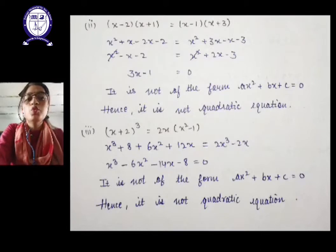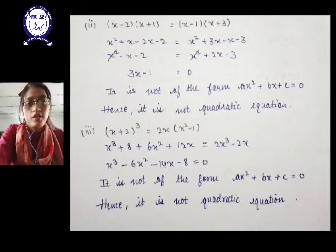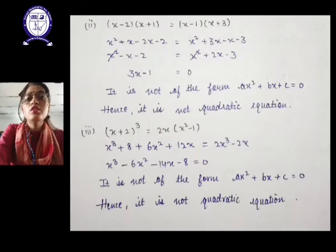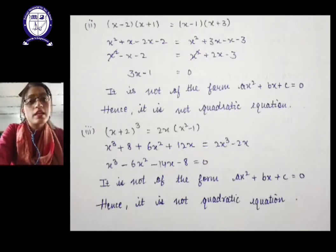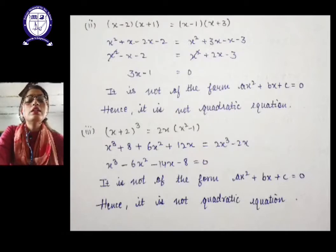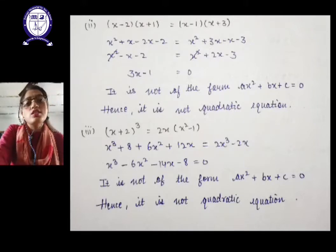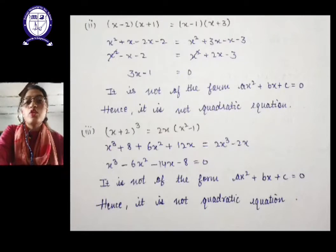The third question: (x + 2)³ = 2x(x² − 1). We need to apply the (a + b)³ identity. We cannot judge an equation just by looking at it — a power of 3 might cancel out, as we saw in question 2 where x² got eliminated. So we must first solve it. After solving, the equation becomes x³ − 6x² − 14x − 8 = 0. Since there is a term of power 3, it is clearly a cubic polynomial, not a quadratic equation.